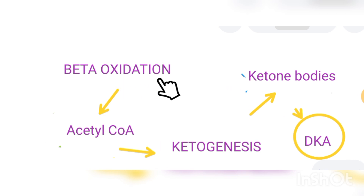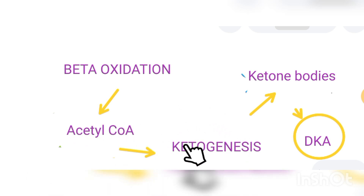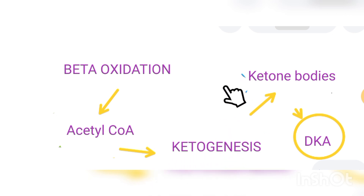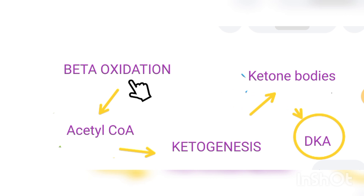One of the key pathways that has to be mentioned is beta-oxidation, because from beta-oxidation we generate acetyl-CoA, which in the hepatic cells is used in the process known as ketogenesis, thereby generating ketone bodies, which of course, if produced in excess, will lead to DKA. So you have to understand how we get to DKA from mere metabolic pathways.